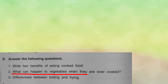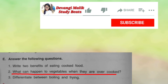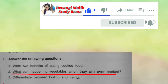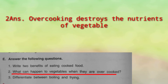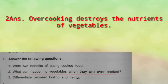What can happen to vegetables when they are overcooked? If the food is overcooked for a long time, the nutrients are lost and they are not healthy anymore. Overcooking destroys the nutrients of the food.